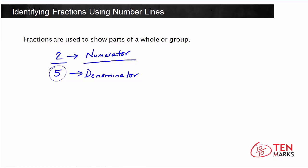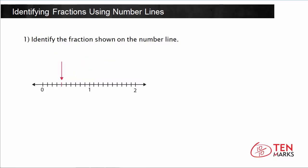Now let's take a look at how we can identify fractions on a number line. Here's a number line, and what we want to do is identify the fraction shown — that would be the little tick mark there in red. This entire space between 0 and 1 represents one whole. If you count, you'll see that there are 10 equal parts between 0 and 1, so the denominator of this fraction is going to be out of 10, because the denominator represents the total number of parts in the whole.